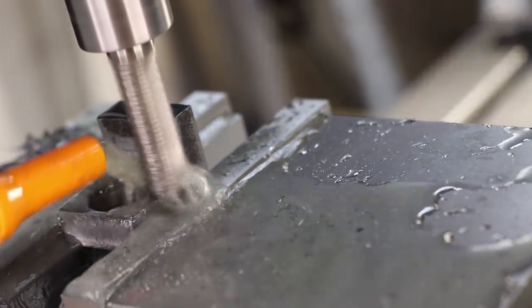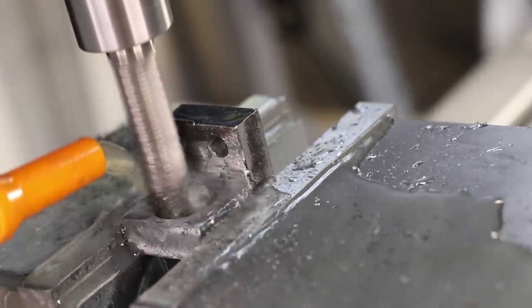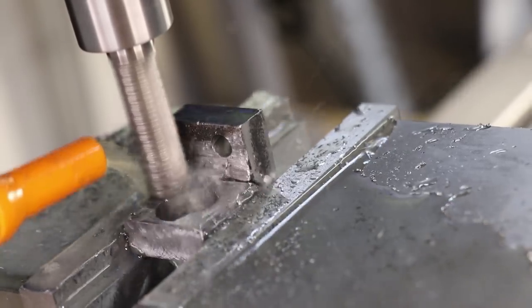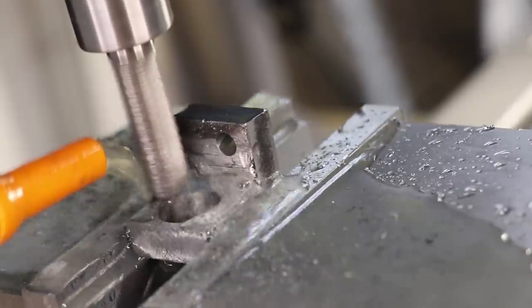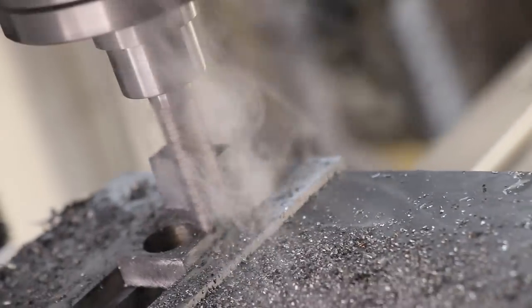So I used the mill to take off some of the material on the back face. In doing this I did take off a little bit too much and I milled through the weld material, so another trip to the welder and I can finish this part.